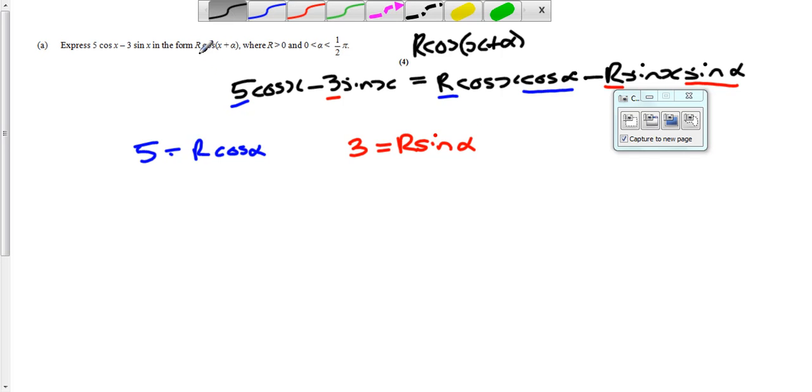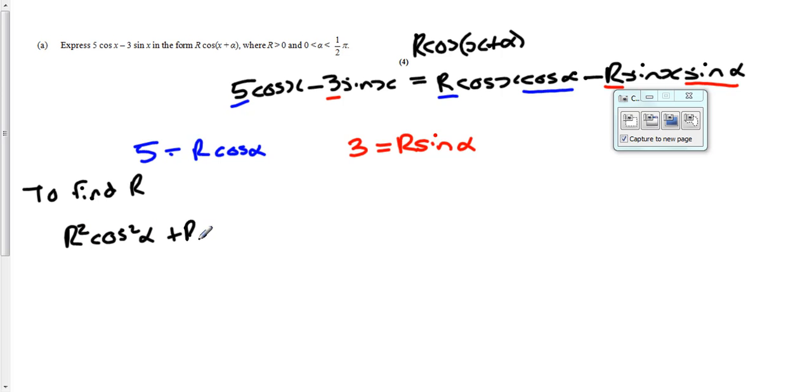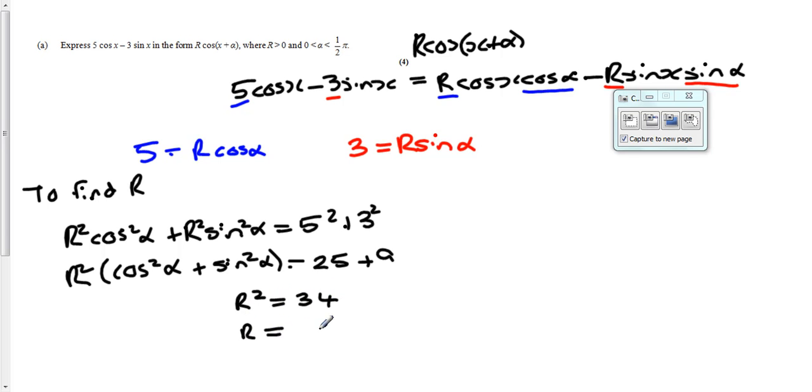Now to complete the question, we're going to need to find two things: we need to find R and we need to find α. First of all, to find R, what we need to do is take these two expressions here and we're going to square them both and add them together, which will give us R²cos²(α) + R²sin²(α), and that will be equal to 5² + 3². Now if I factorize the R² out, leaving us with cos²(α) + sin²(α), which you should recognize as being equal to 1, so that just means we're left with R² = 34, and R is the square root of 34.